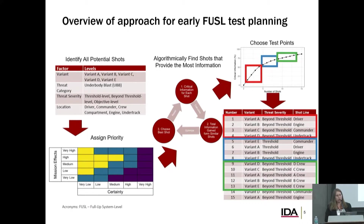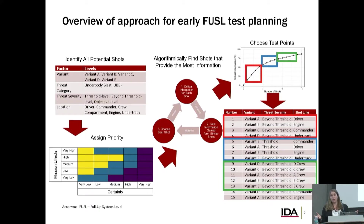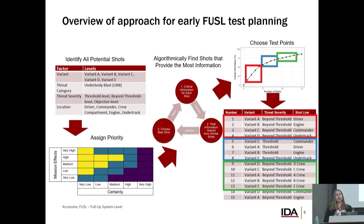Here's a high-level overview of our approach. In the top left, you'll see a table with factors and levels — just like traditional DOE, we identify the factors and levels important for the particular application. Using this, we identify all of the potential FUSIL shots that could be conducted — far more than we could actually conduct, but we want to start by scoping the problem. The next step is to assign priority to all of those potential shots using the color chart in the bottom left, which we do using subject matter expertise. That input feeds an algorithm, which will optimize all of the information provided and ultimately generate the chart and the table on the right.